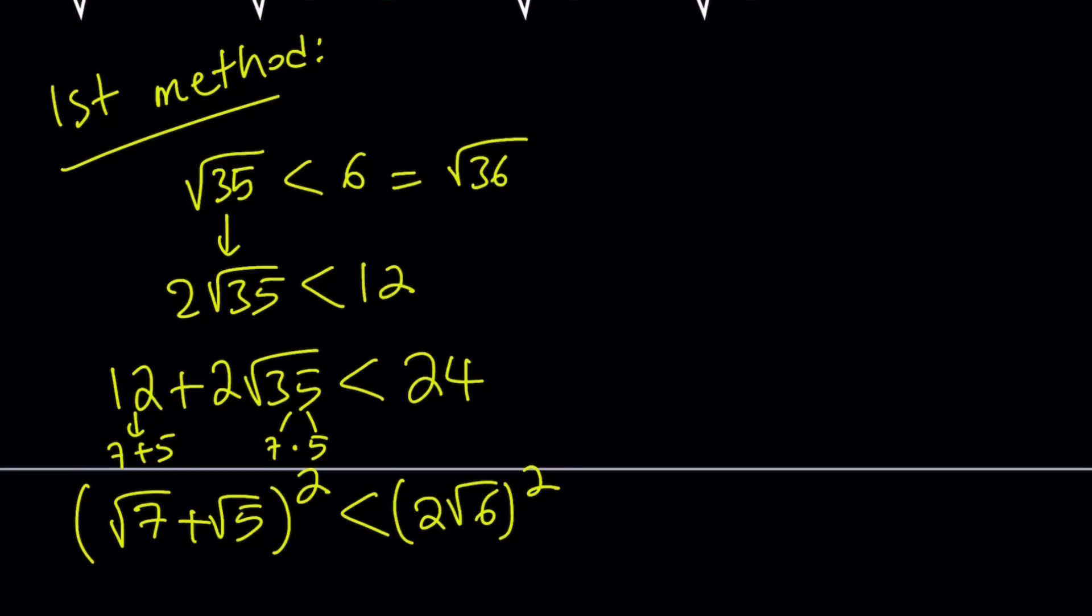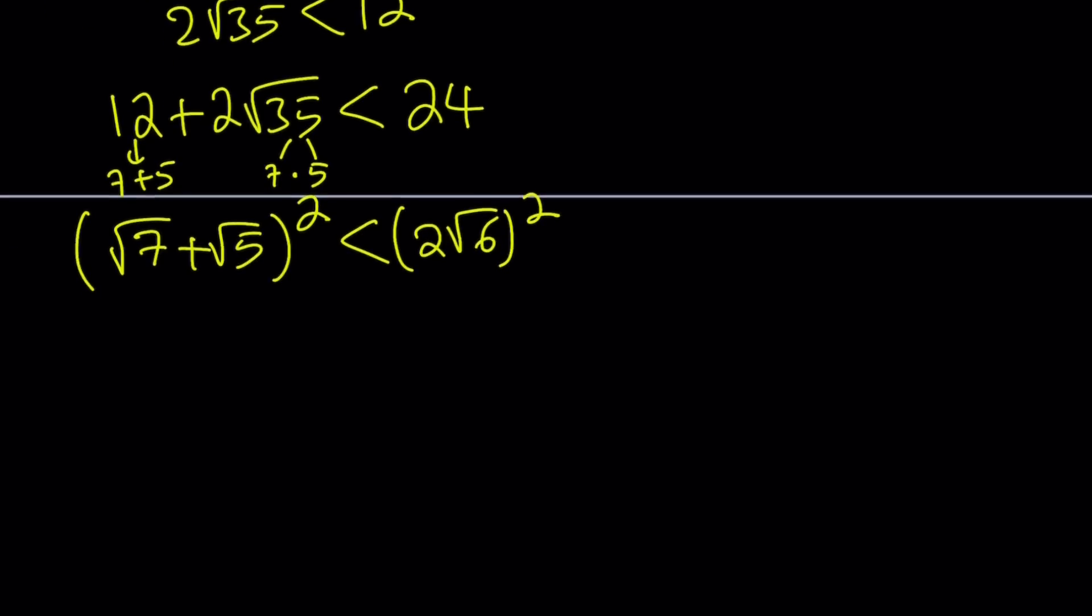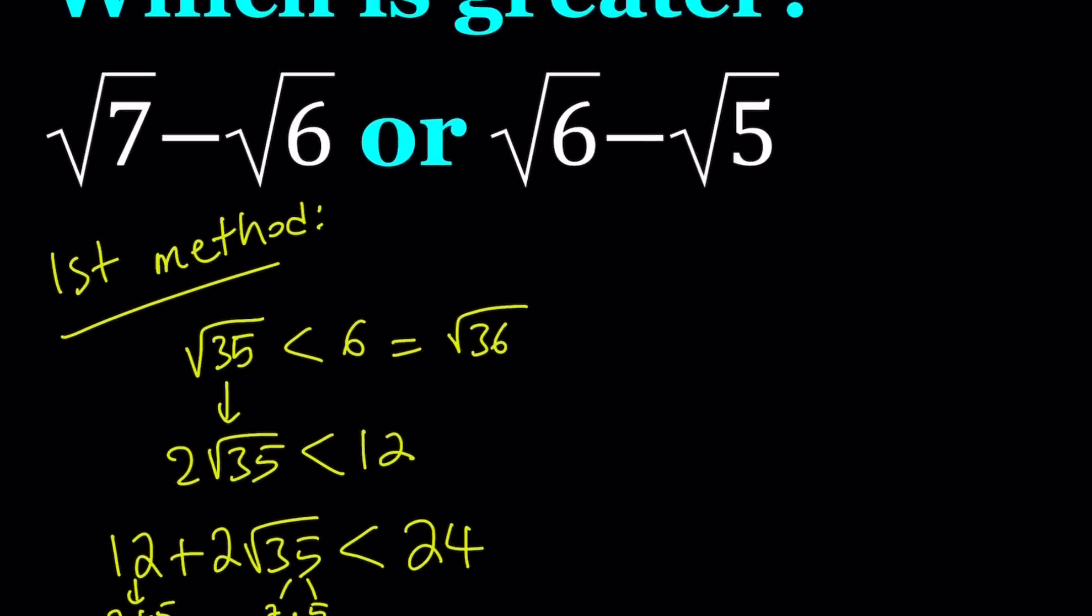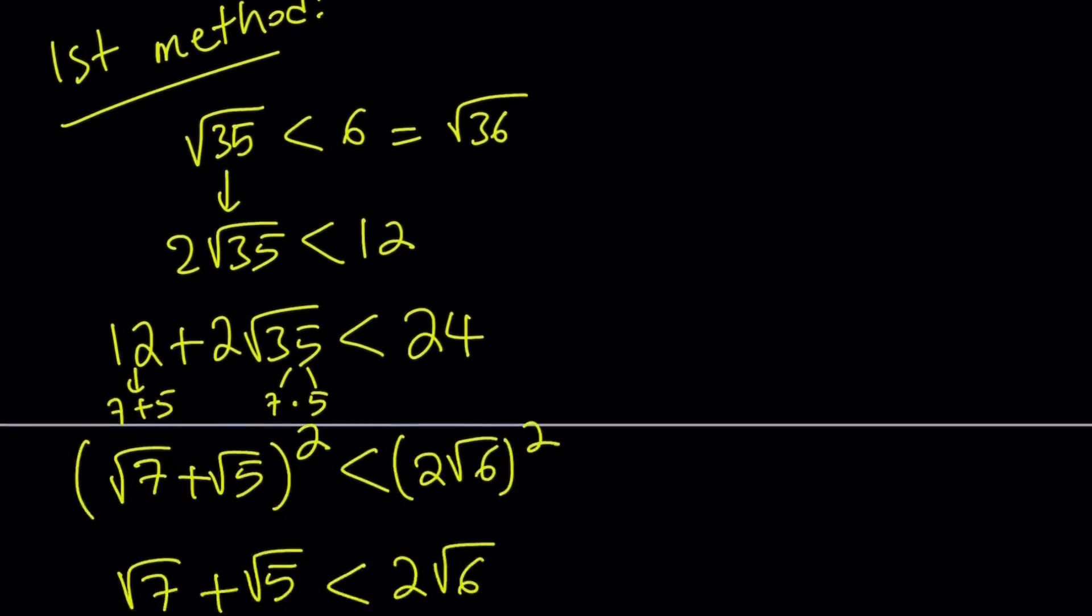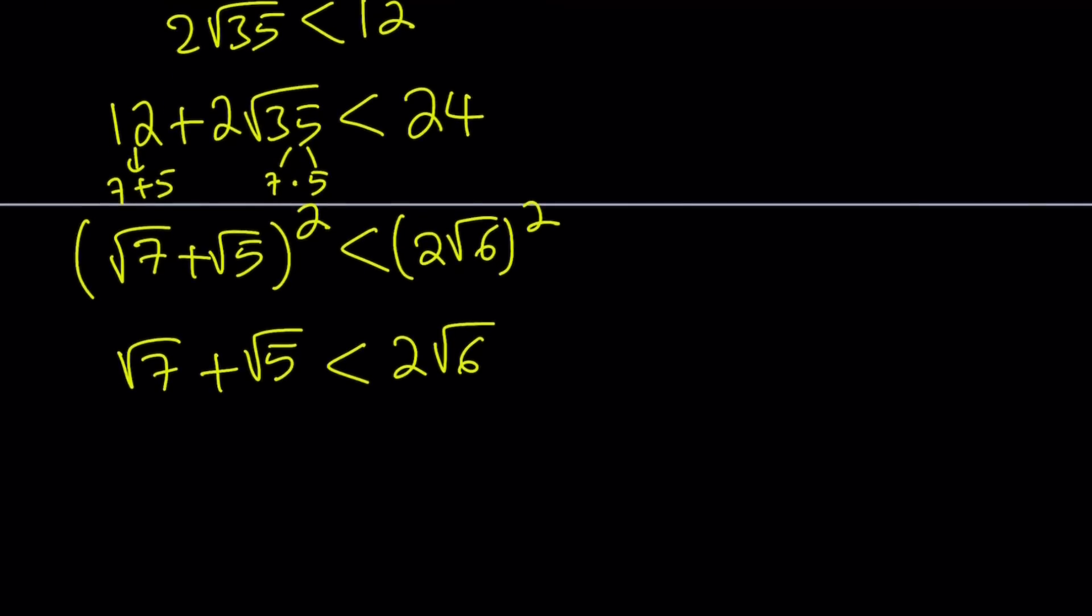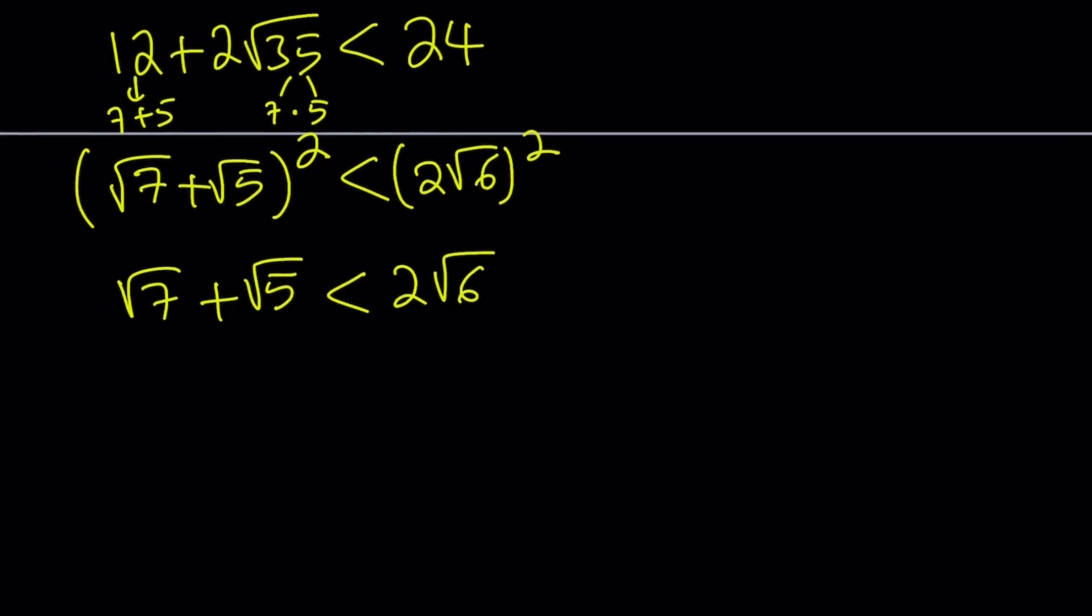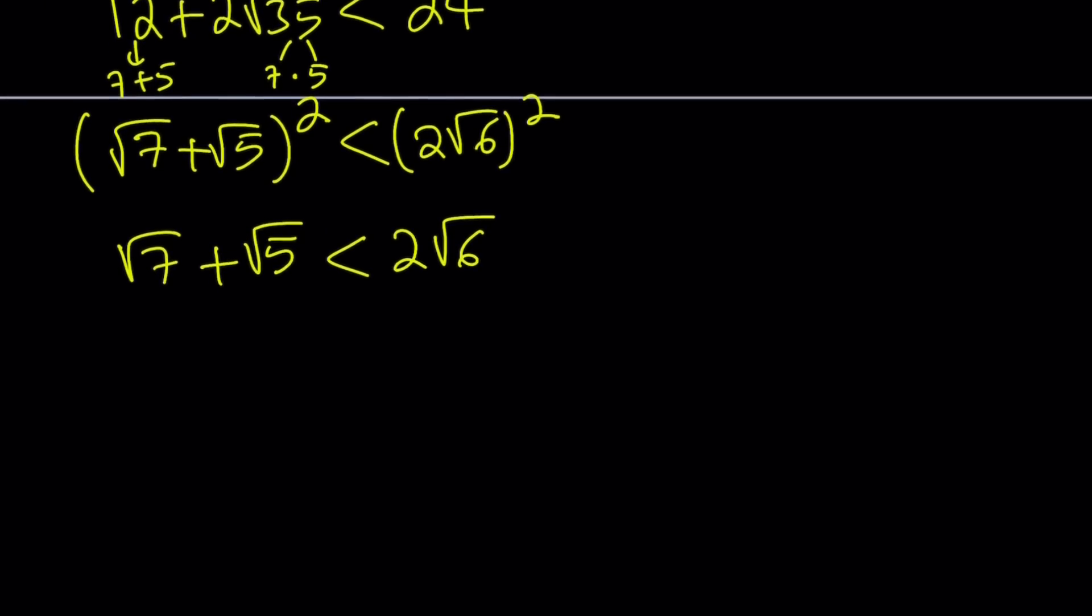And now, notice that we're comparing two squares. Can we just take square roots and get away with it? And yes, if both sides are positive, then we're allowed to just remove the squares by taking square roots. So this implies square root of 7 plus square root of 5 is less than 2 root 6. Now, remember, we're trying to compare these two numbers, and this is actually going to show you one more time that math is actually awesome.